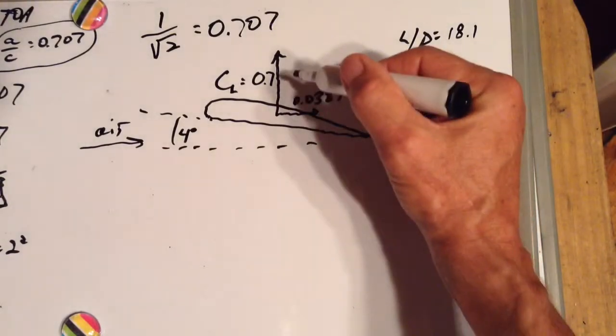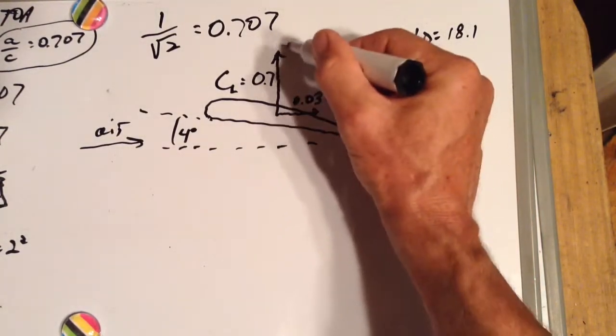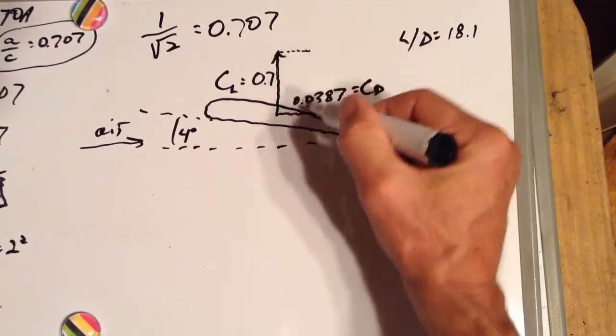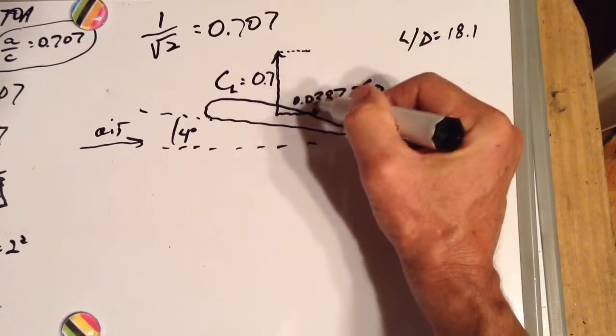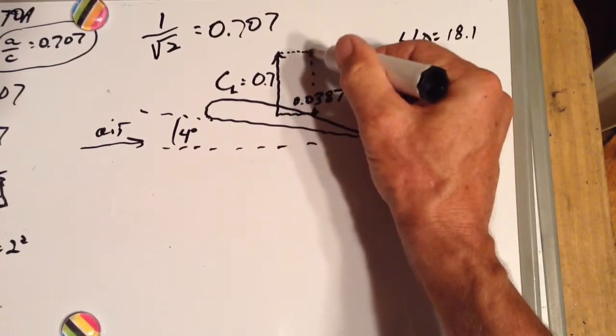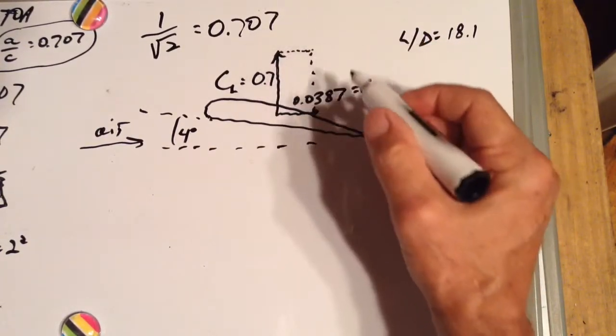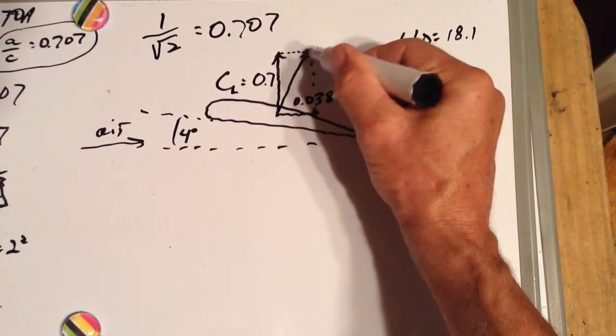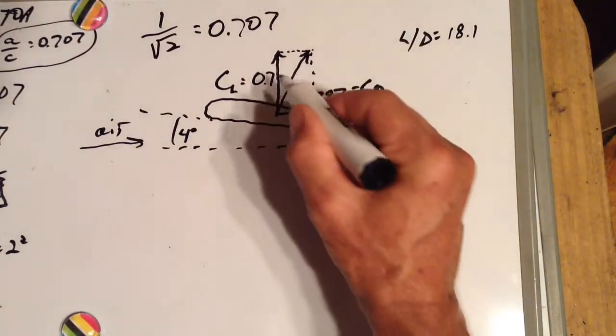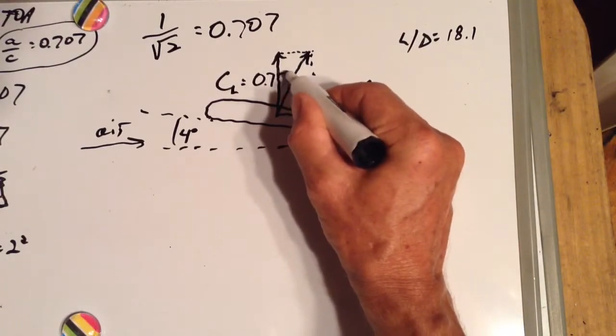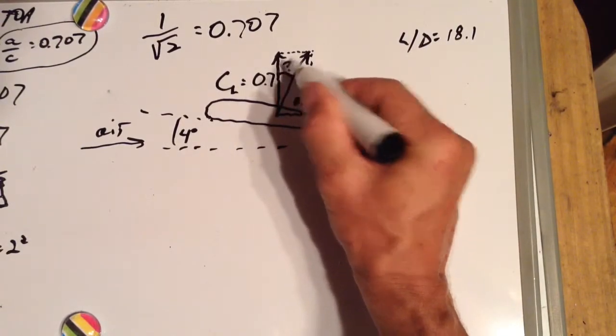So here's the resultant vector. If we just draw a dotted line over here the same length as our drag line, draw a dotted line up here the same as our lift vector, then our resultant will go from there to there. So what we really want to know is this angle. What is that angle?